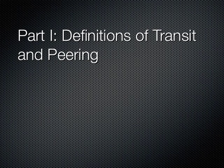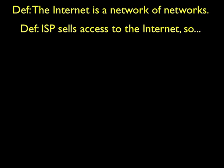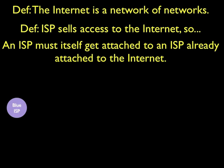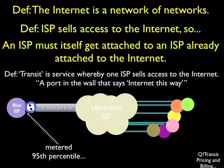Now let's get into the lexicon of peering. At the most basic level, understand that the internet is a network of networks. An internet service provider, by definition, sells access to the global internet. So an internet service provider must get itself connected to an entity that is already attached to the global internet. There are two dominant methods for internet interconnection.